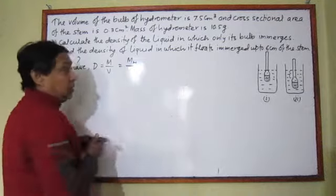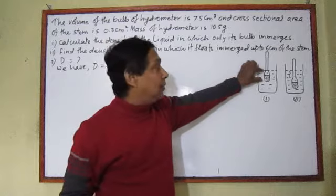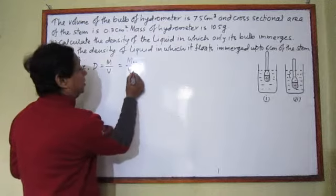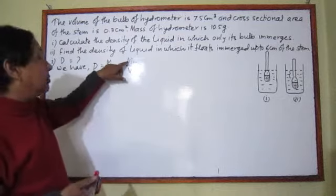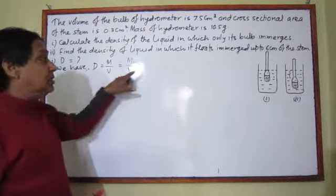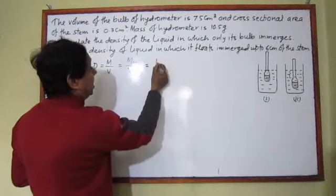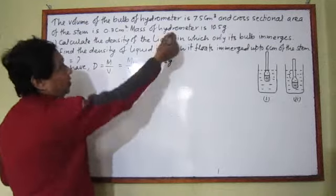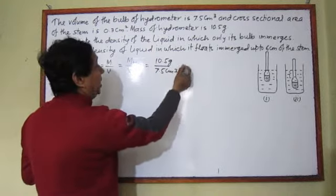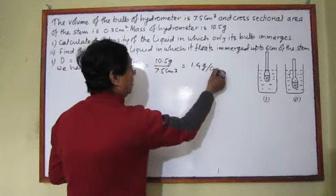The volume of the displaced liquid is equivalent to the volume of the bulb, because just the bulb is immersed. So, volume of displaced liquid equals volume of the bulb. Mass of hydrometer is given as 10.5 grams, and volume of the bulb is given as 7.5 cubic centimeters. Dividing these gives the density: 1.4 grams per cubic centimeter.